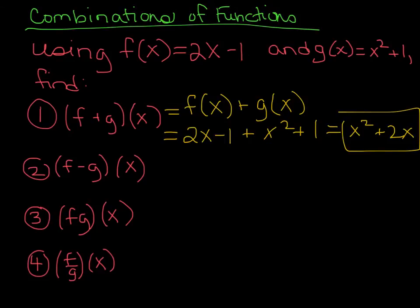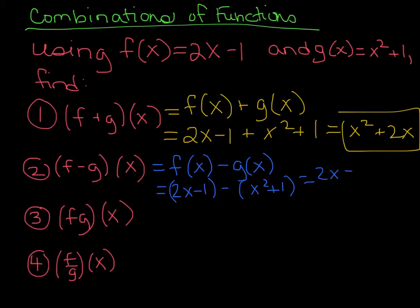Subtraction is very similar. You can do it on your own if you want, or you can just watch me do it. We're going to rewrite this as f(x) - g(x). That is going to give us 2x - 1 - (x² + 1). Do not forget to distribute your negative. In the end, we're going to get -x² + 2x - 2.